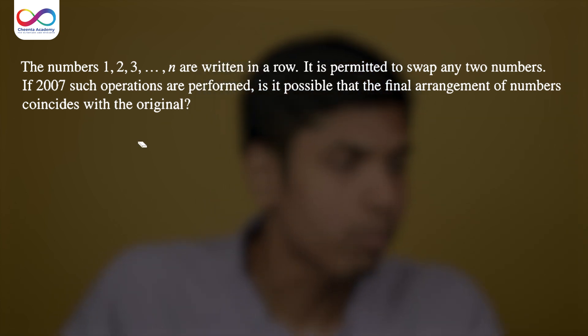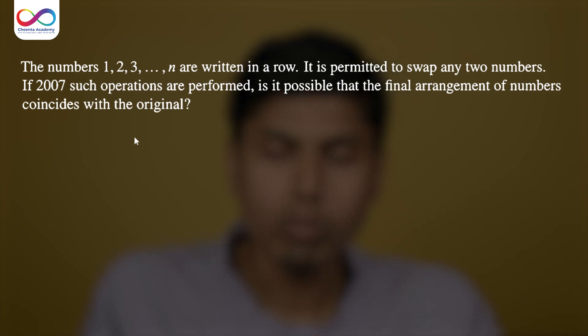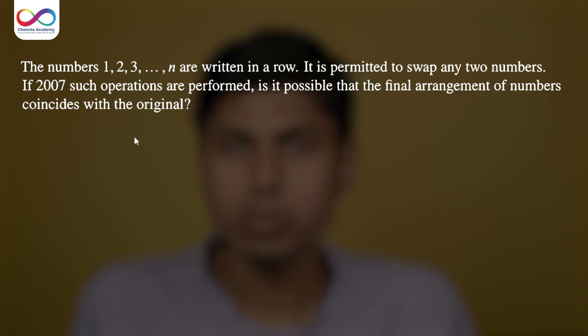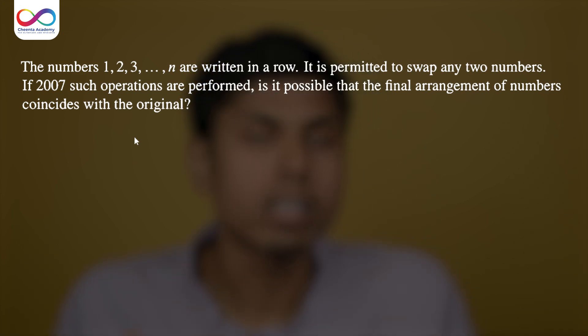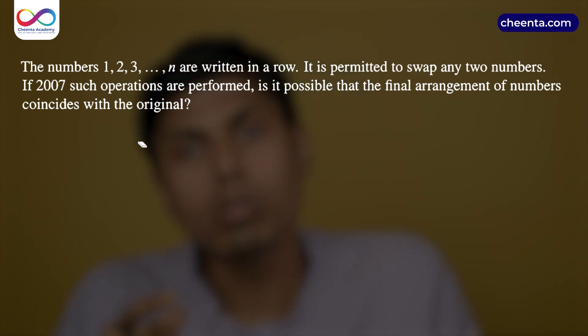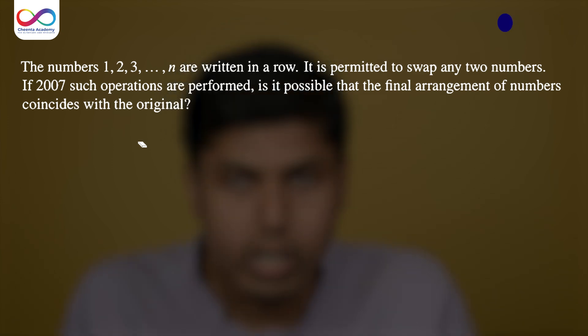As you could see, we have numbers from 1 to n and irrespective of the value of n, the question is not going to change. It is permitted to swap any two numbers. By the word swap, they mean you select two numbers and you interchange their positions. If 2007 such swappings are done, then is it possible to arrive at the original configuration after those many number of operations? This is the question.